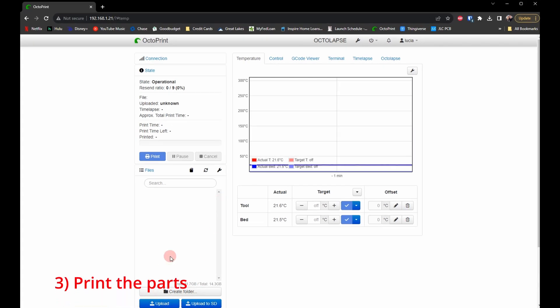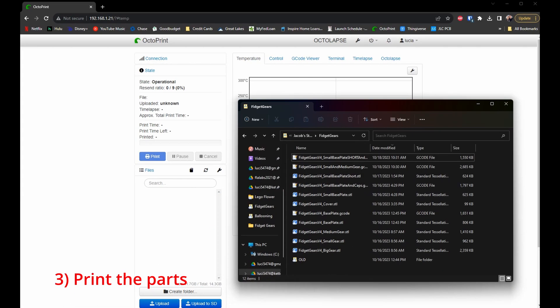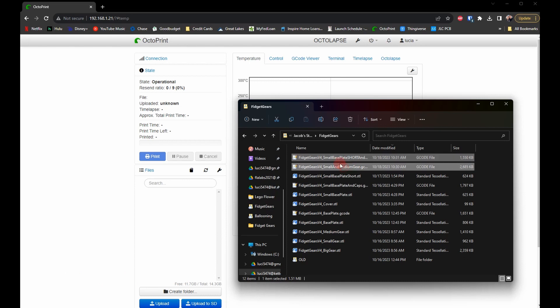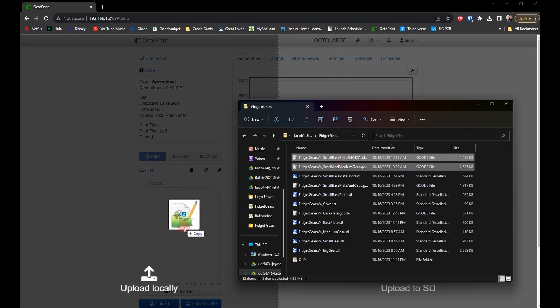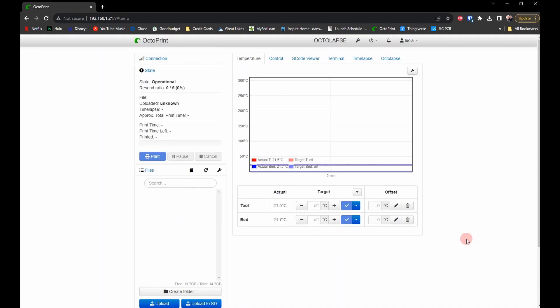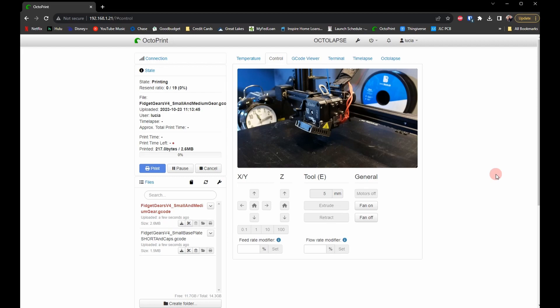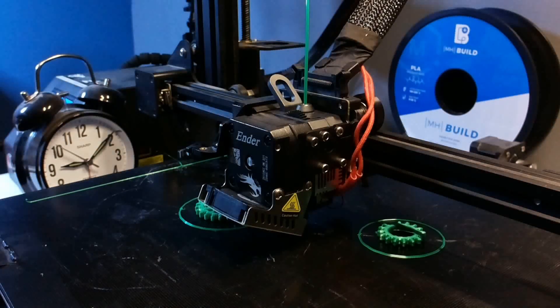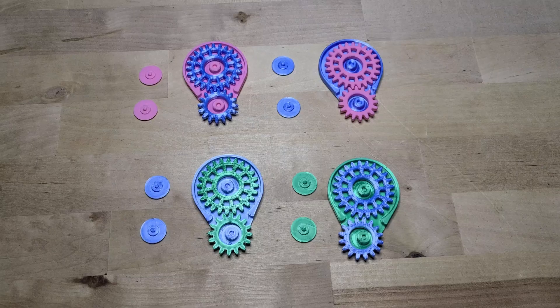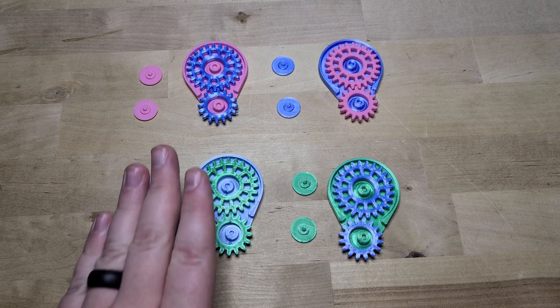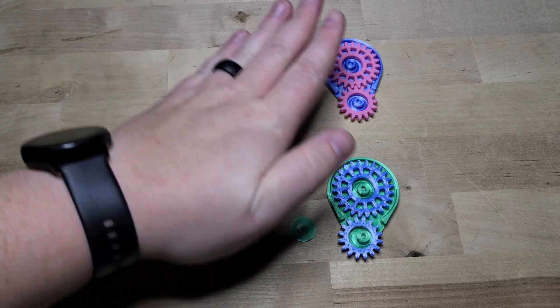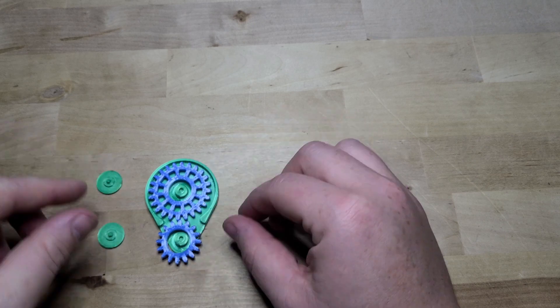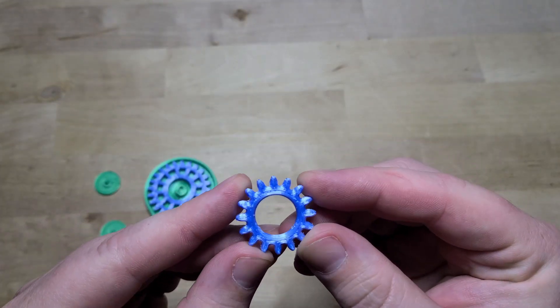I'm still using Octoprint to control my 3D printer, so for me I need to drag those two G-code files into my Octoprint server and press start. I decided to go ahead and print all the color combinations that I had, but in this video I'm going to assemble the green and blue option.